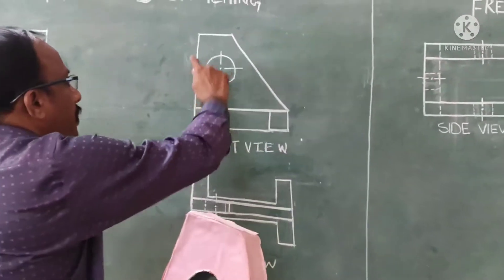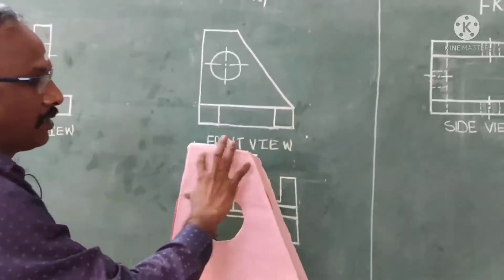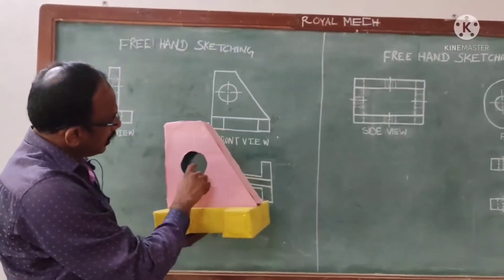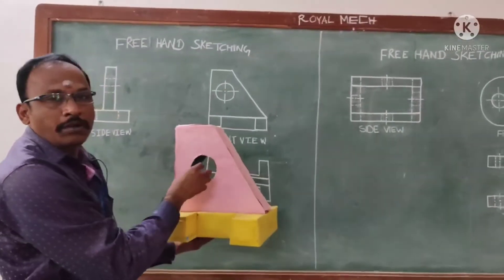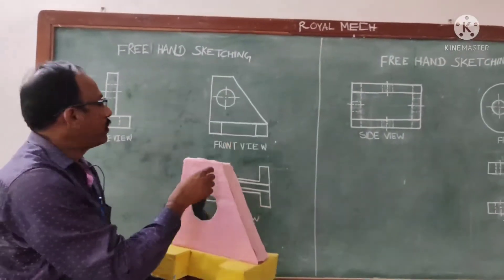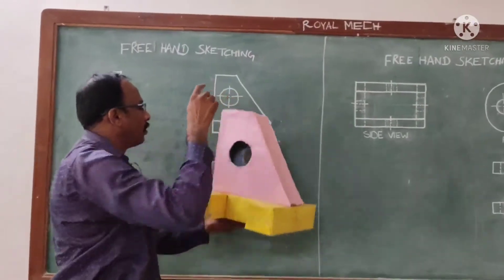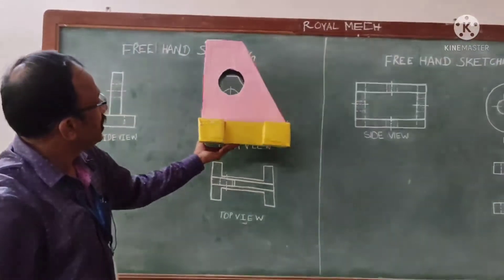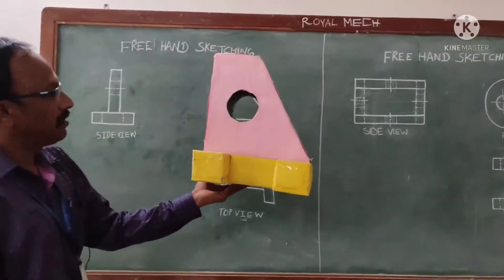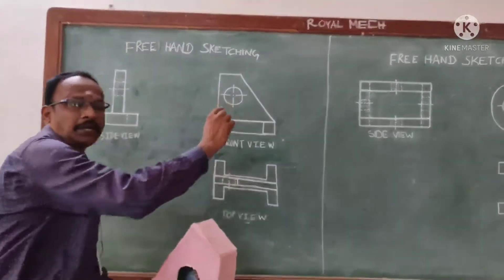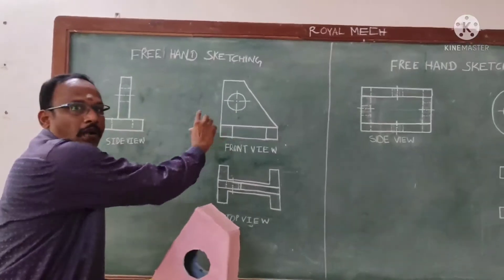So we need to draw this pink color thing. Then, one hole part is removed, so we need to draw this hole. This gives the idea about the front view of this particular object.